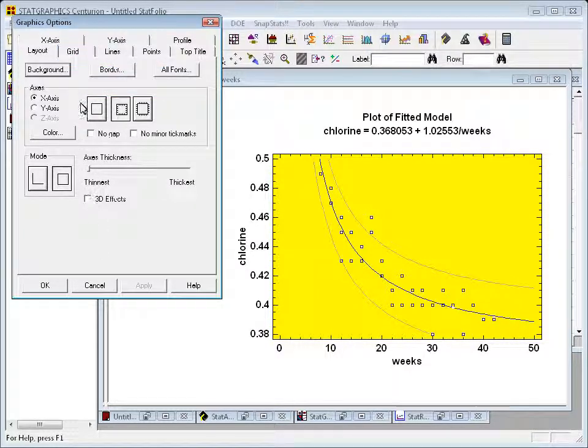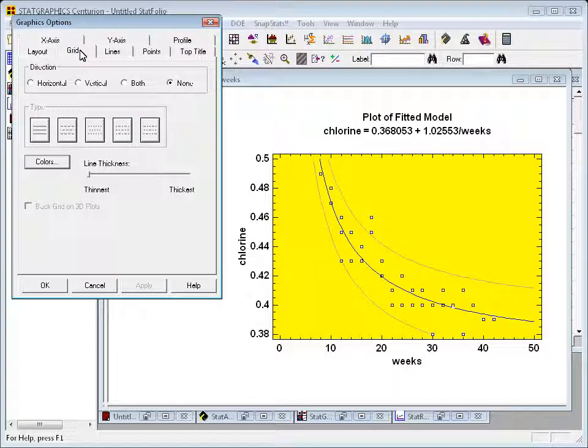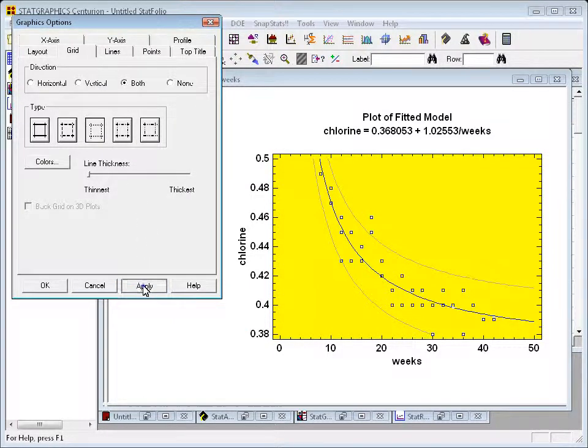The second tab is the grid tab. Here I can add a grid to the graph. Horizontal, vertical, or both. I think I'll have it drawn in both directions. The middle button here will give me a grid that looks somewhat dashed. Let's hit apply and see. Yeah, that's a dashed line.